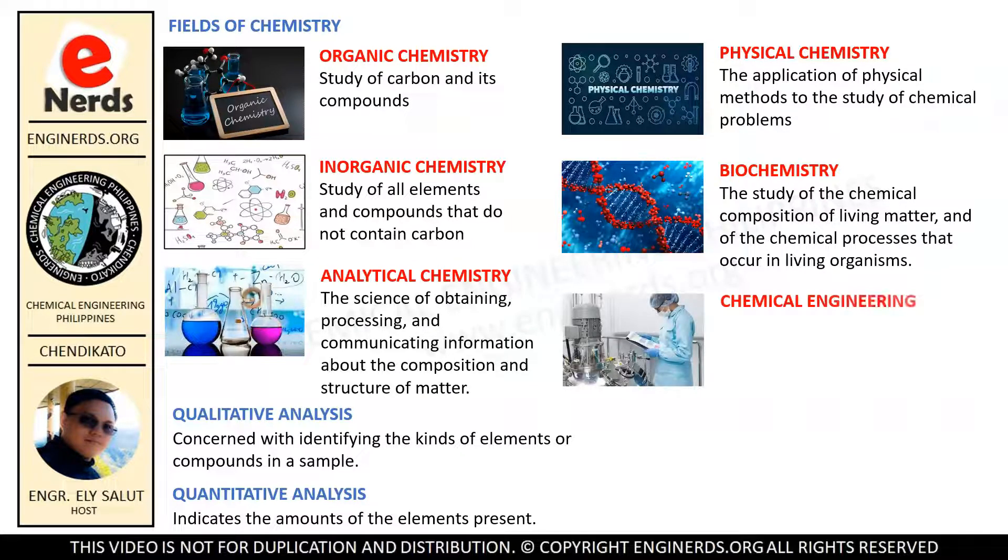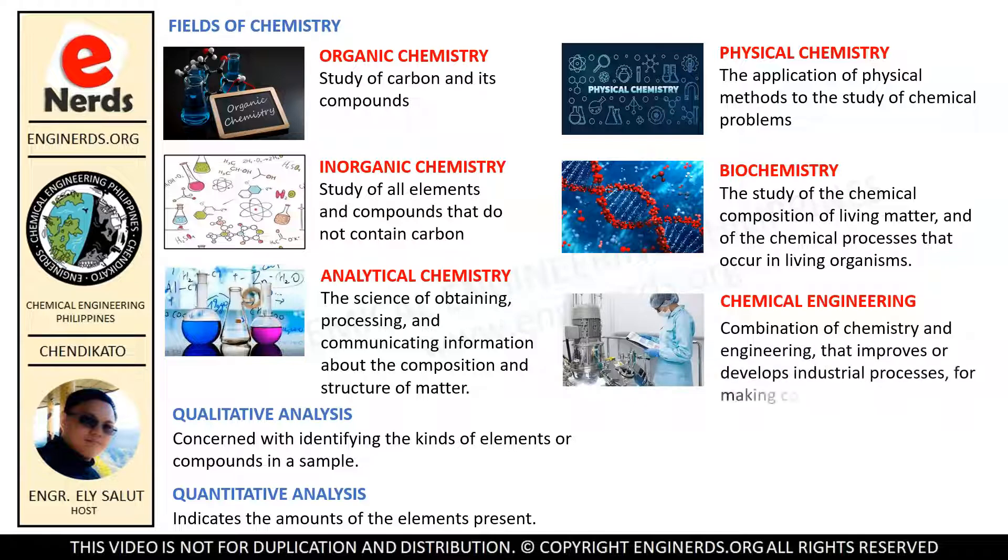Chemical engineering is a combination of chemistry and engineering that improves or develops industrial processes for making commercial amounts of desirable chemicals that have been produced only in small quantities or in the laboratory.